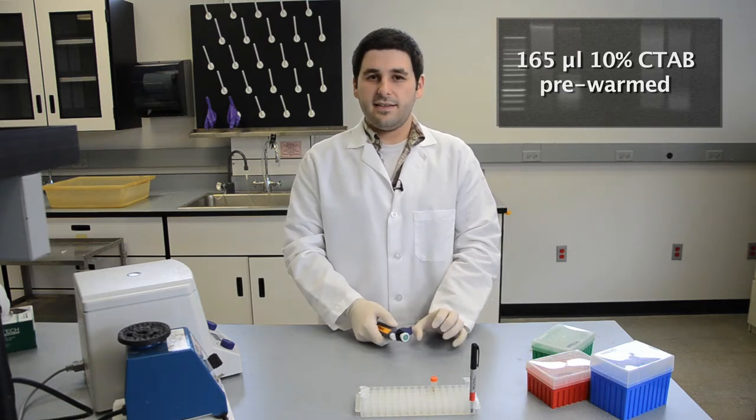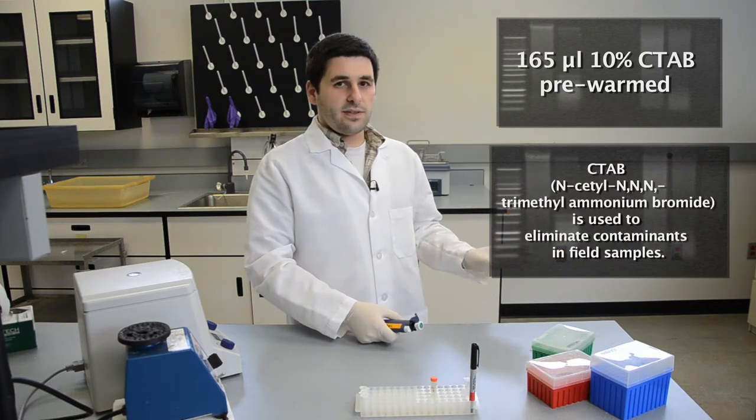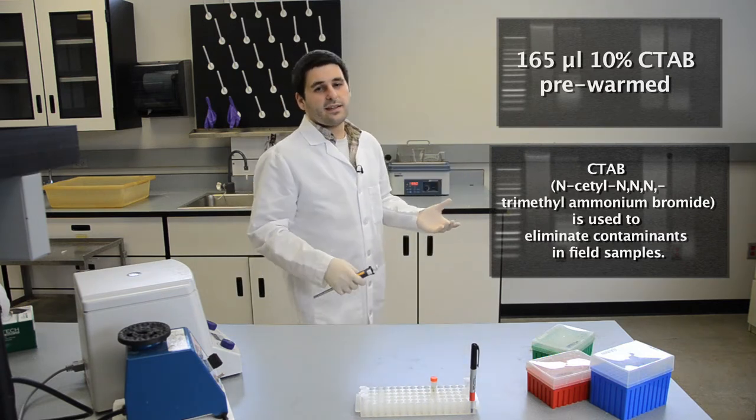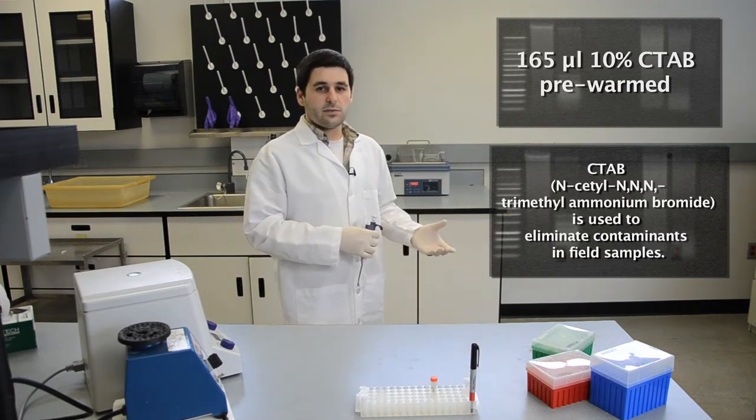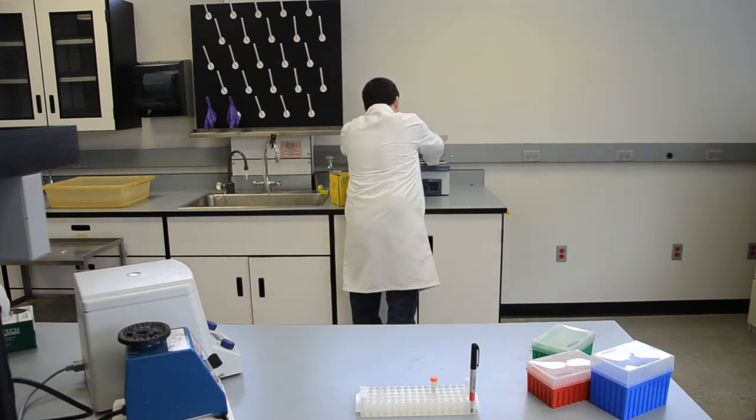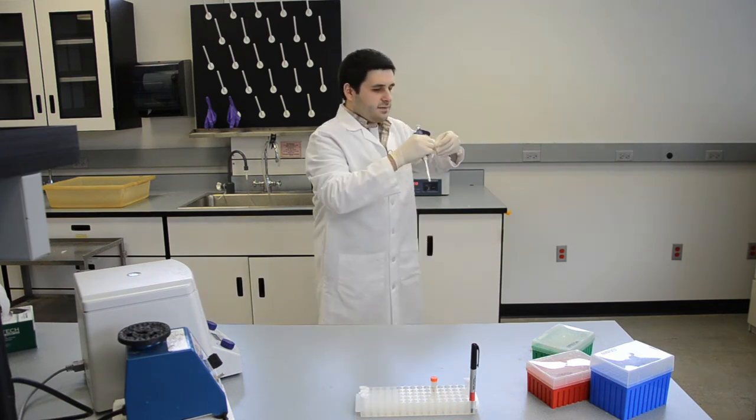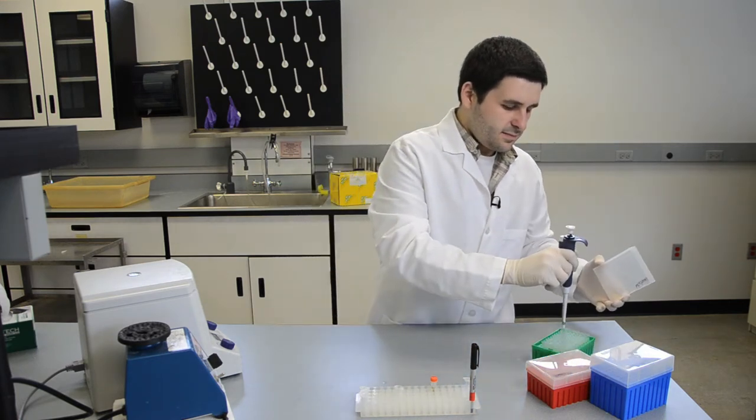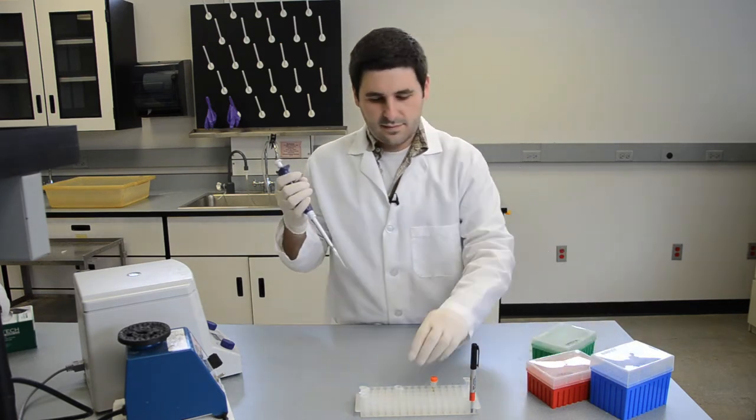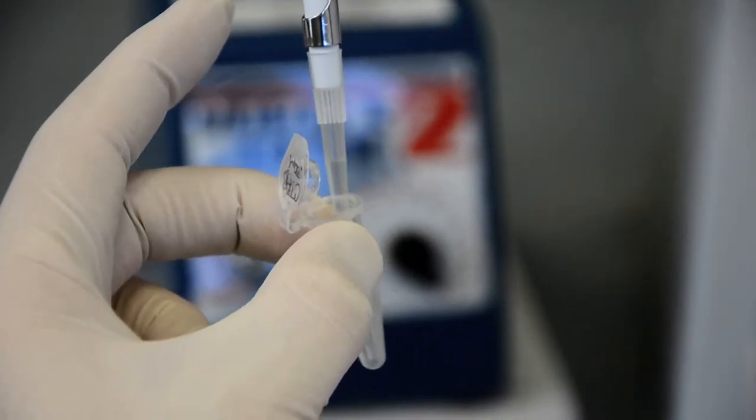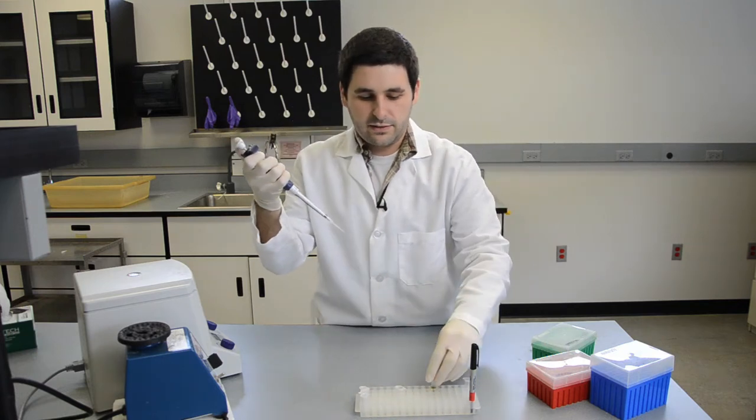We also want to add 165 microliters of 10% CTAB. I have my 10% CTAB already at 55 degrees pre-warming, which makes it less viscous so it's easier to work with and we get a more accurate amount. Add 165 microliters straight to the liquid in the two mil cryovial.